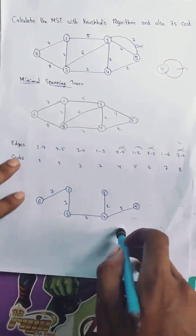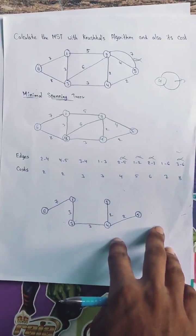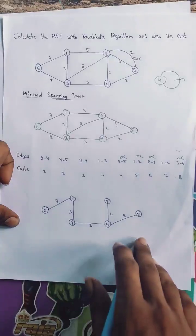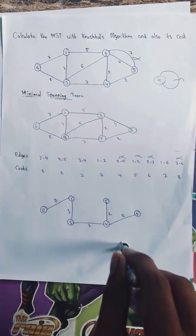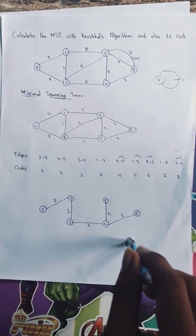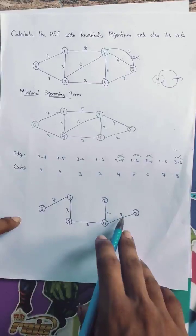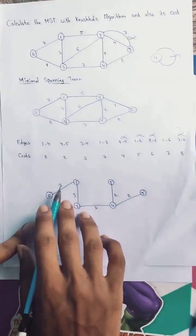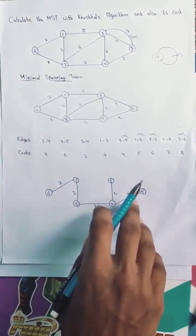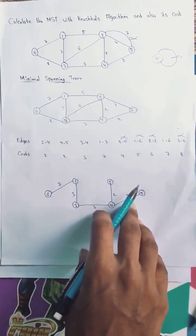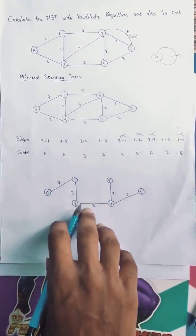Thus the minimum spanning tree is completed using the above ordered edges. We can form many spanning trees, but there is only one minimum spanning tree — that is the spanning tree which contains the least total cost. The total cost is 7 + 3 + 3 + 2 + 2 = 17, which is the least cost among all spanning trees.